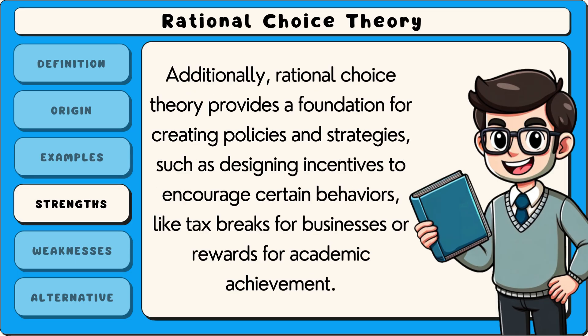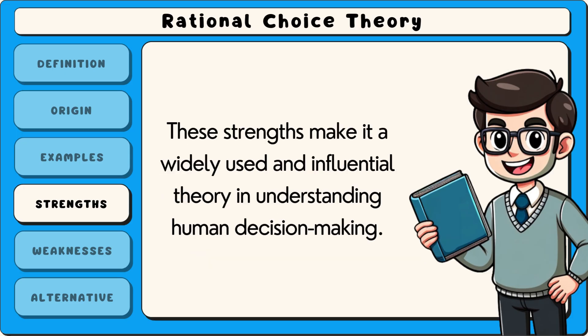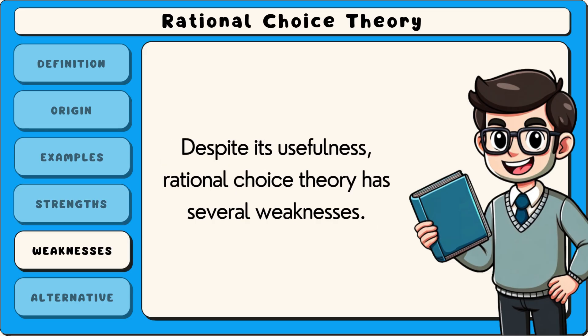Additionally, rational choice theory provides a foundation for creating policies and strategies, such as designing incentives to encourage certain behaviours, like tax breaks for businesses or rewards for academic achievement. These strengths make it a widely used and influential theory in understanding human decision-making.